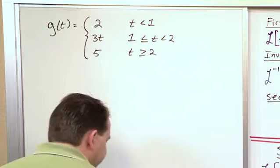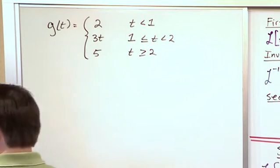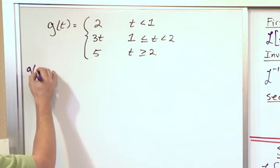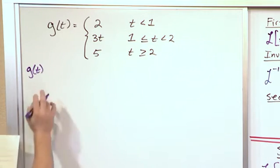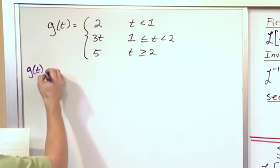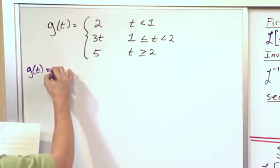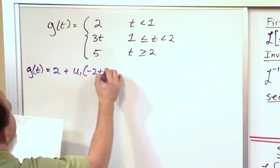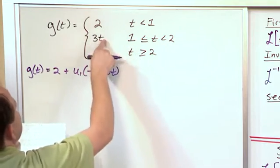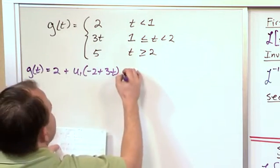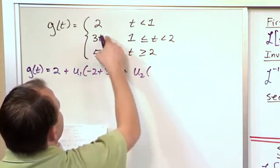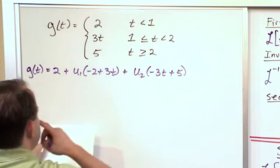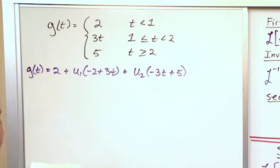We don't have to think too hard about this because we've actually written down the unit step function version of it. It's 2 plus u1 times negative 2 plus 3t — you can read that as turning that off and turning that on — and then u2 turns this one off plus 5 turns this one on. So that's the function.